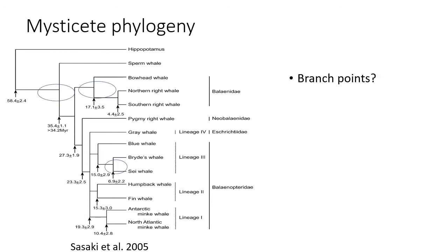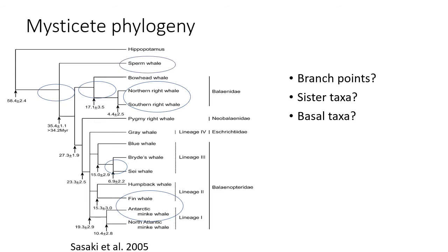Here's an example from a whale phylogeny with branch points throughout. The northern right whale and southern right whale are sister taxa. However, the fin whale and the Antarctic minke whale are not sister taxa — they are in different lineages. The basal taxon for all whales is the sperm whale, and the hippopotamus is basal to everything on this phylogeny. There is also a polytomy where four different branches emerge from one node, meaning that exact relationship is unknown based on available data.